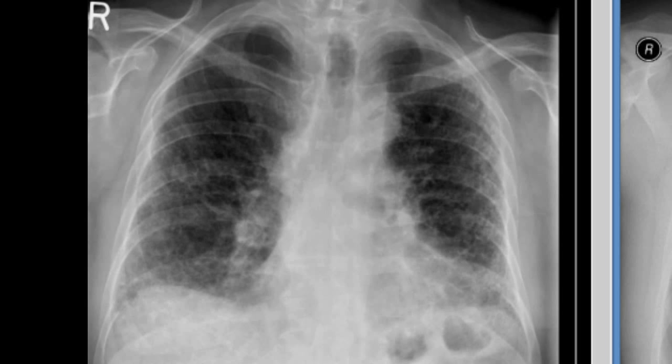The differential diagnosis of architectural distortion with honeycombing and traction bronchiectasis includes idiopathic pulmonary fibrosis, collagen vascular disease especially scleroderma, asbestosis, drug or radiation-related fibrosis, sarcoidosis, and chronic hypersensitivity pneumonia.